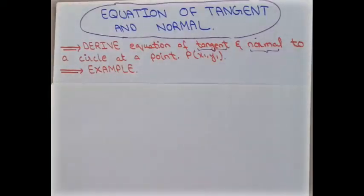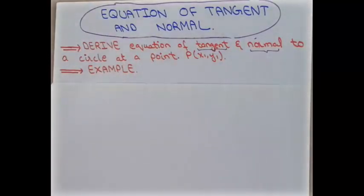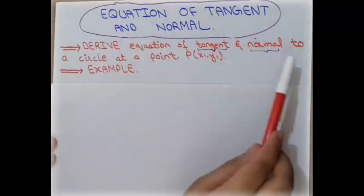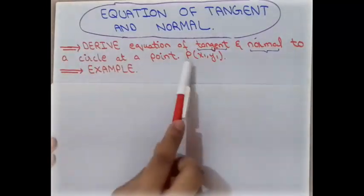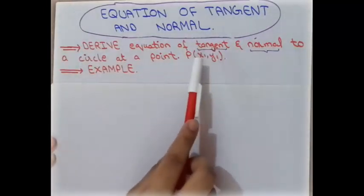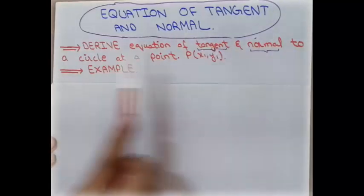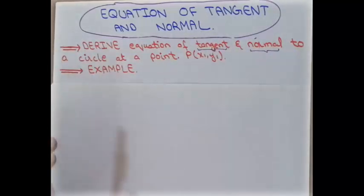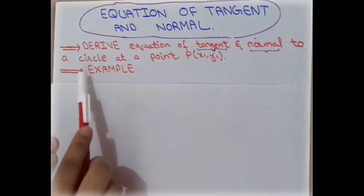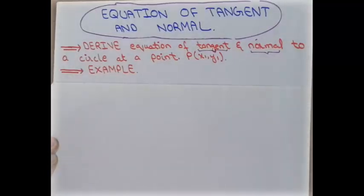In this lecture we will learn how to find the equation of the tangent and normal. There are two objectives of this video: first, we discuss how to derive the equation of a tangent and normal to a circle at a point P having coordinates (x1, y1), taking the general equation of a circle. In the second objective, we will take an example.